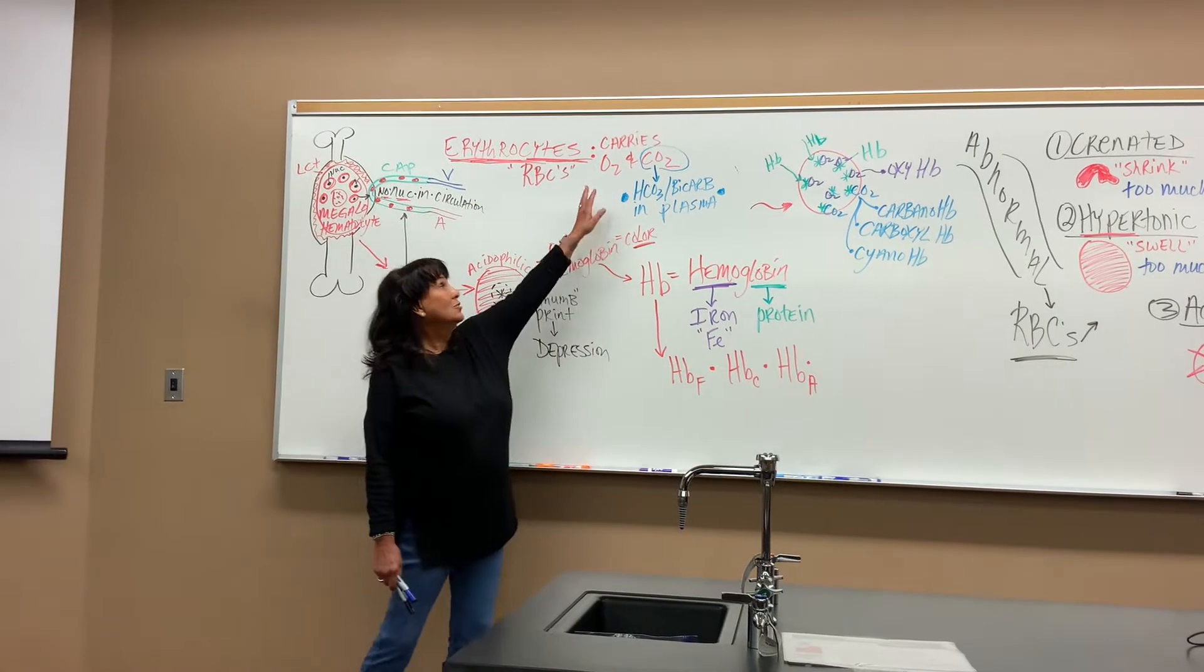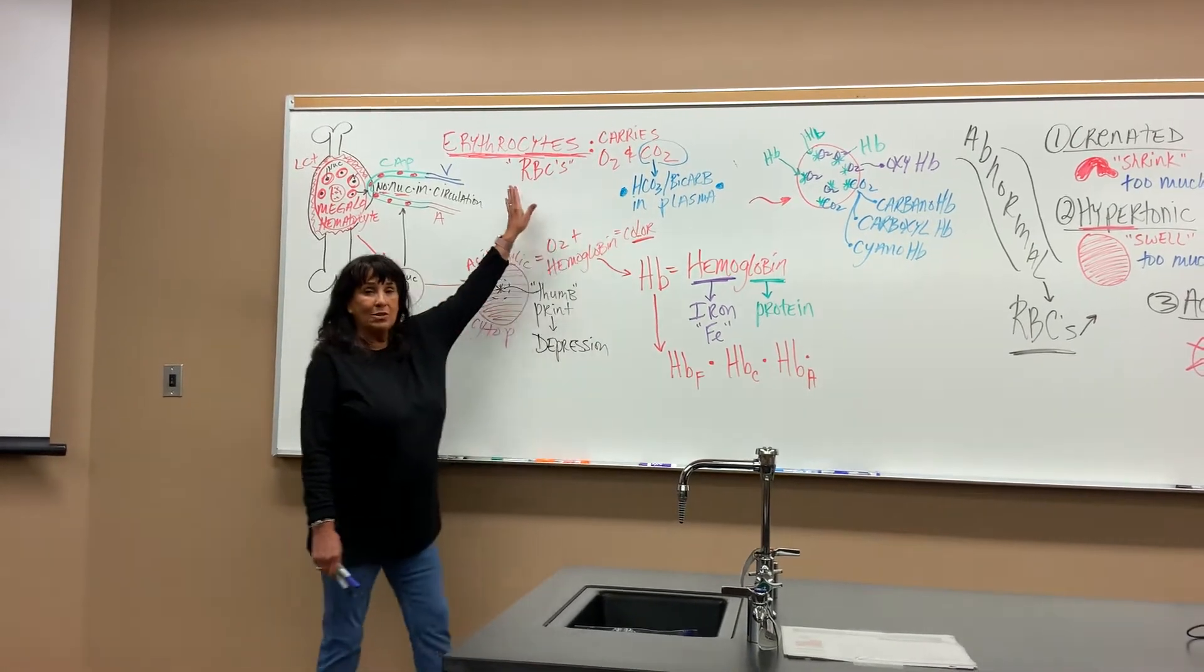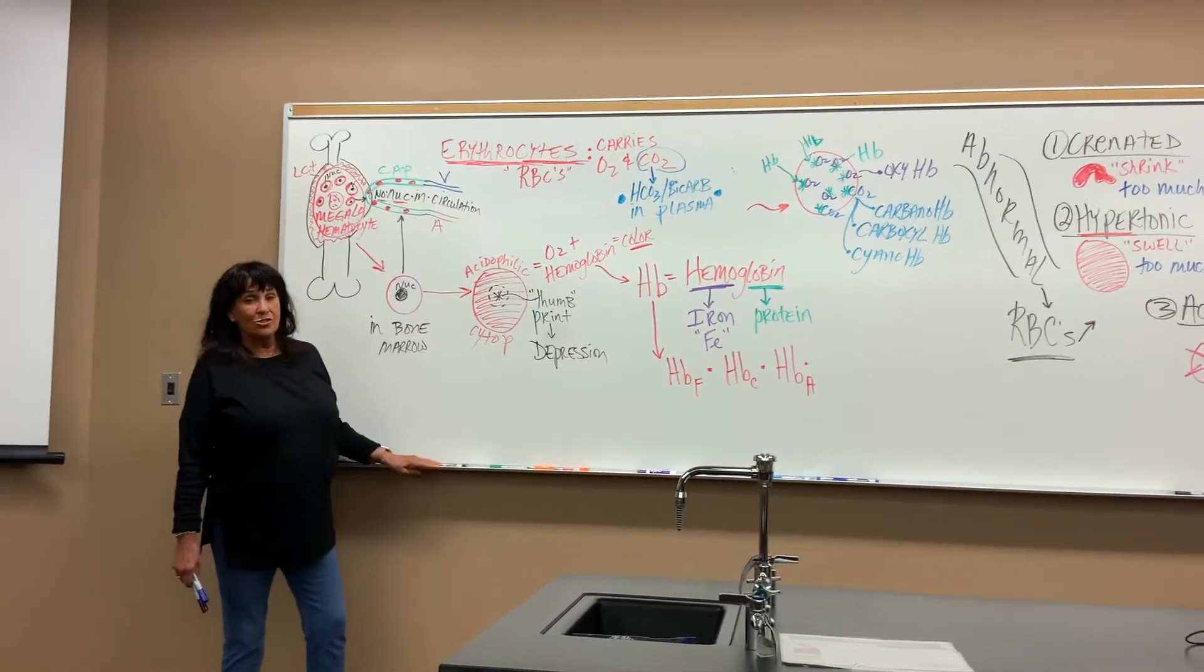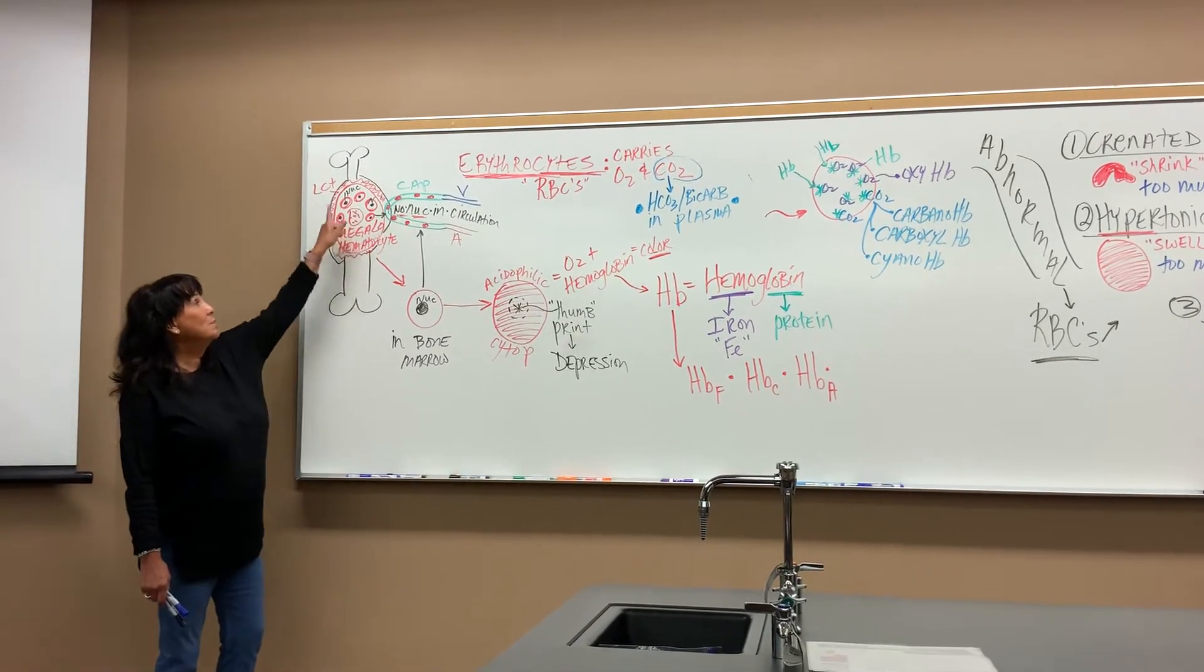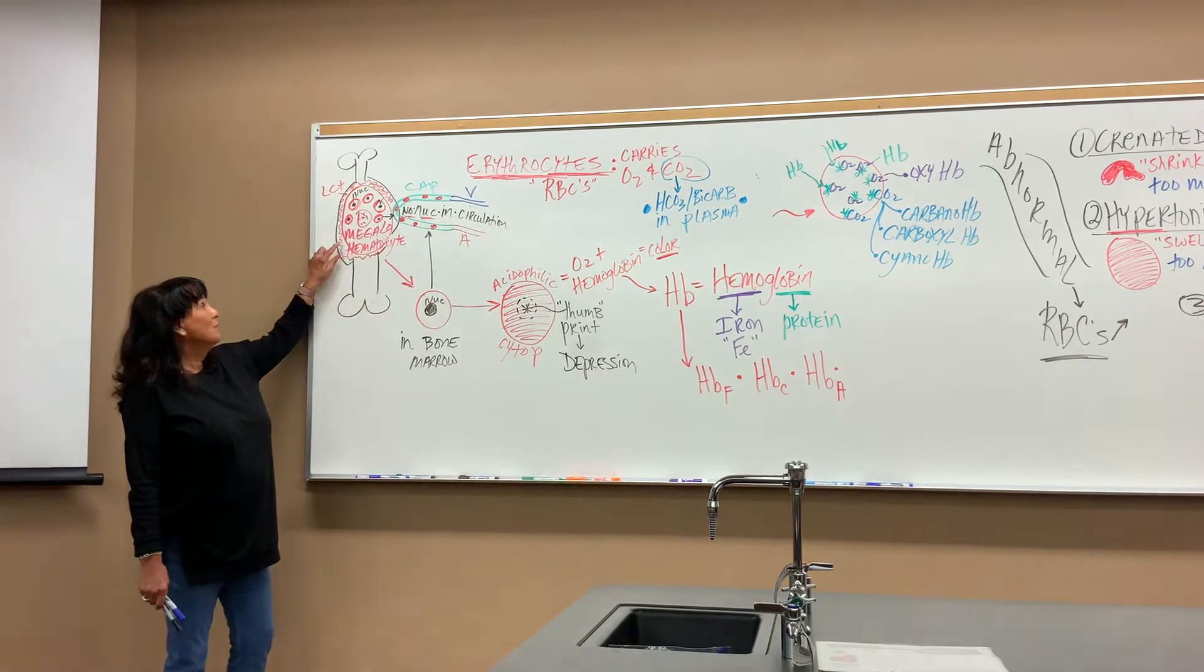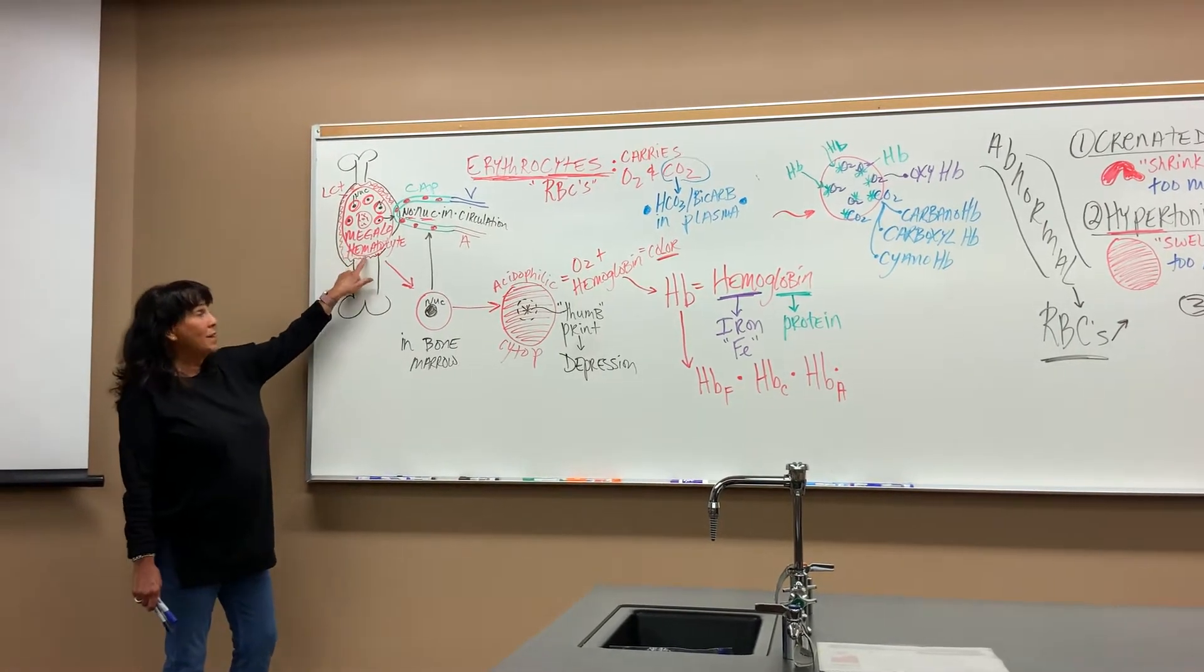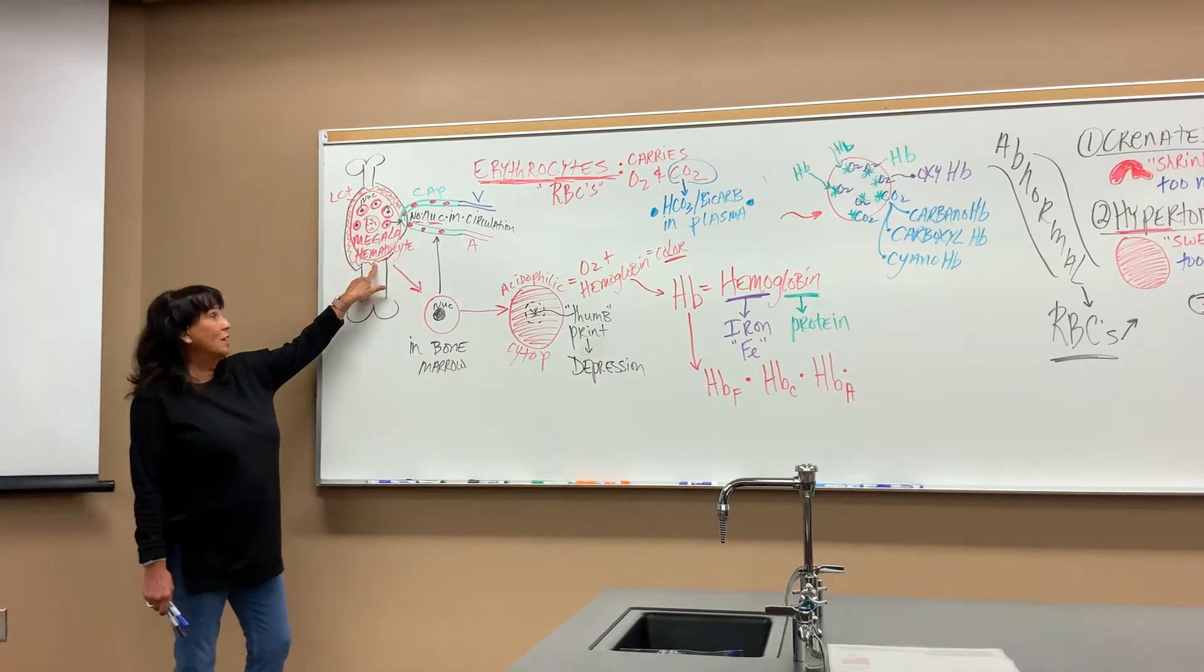So that is its only function, the erythrocytes, they do all the gas exchanges, period. Now, where do they develop? They develop in the bone marrow, from a loose CT cell called the megalohematocyte, just like the other ones.